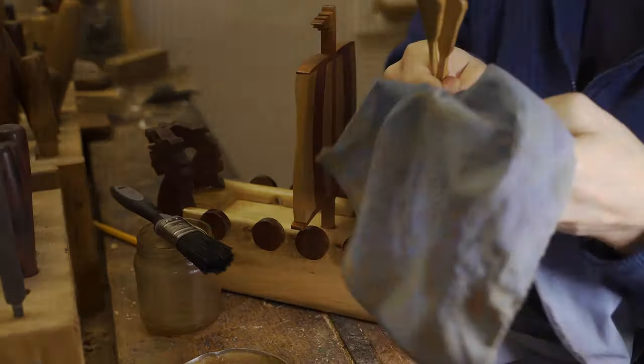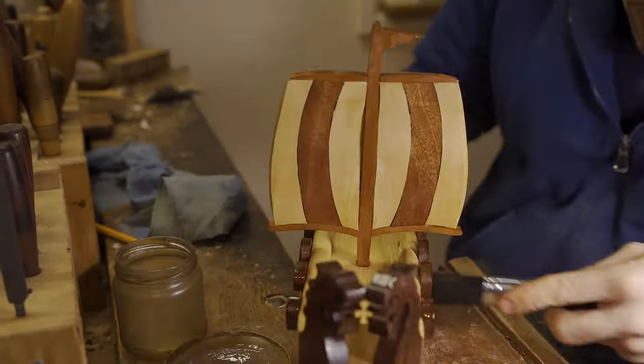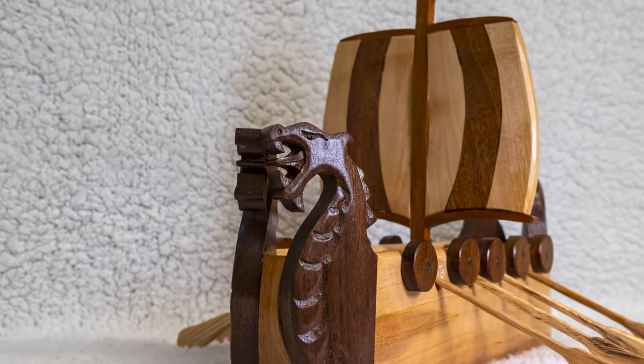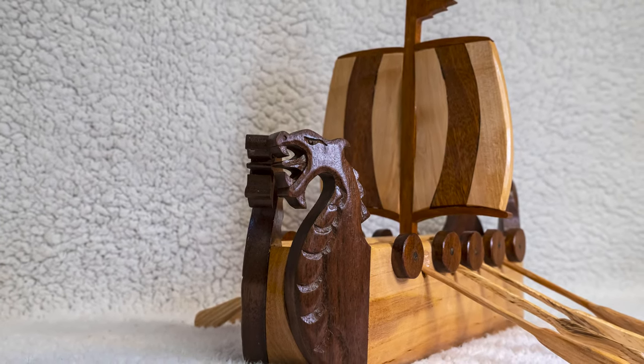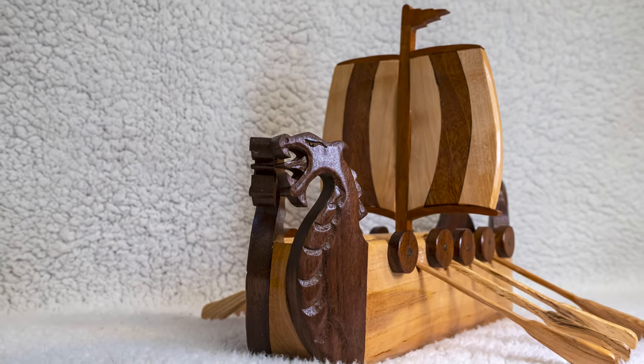Once we've finished with that process, we add the oars as you can see, because we've extended the holes at a 45 degree angle, and that completes the making of our Viking longboats.